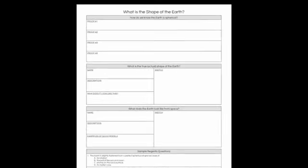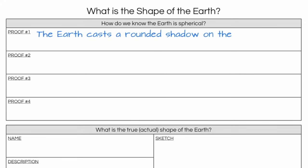Let's go to our handout. Proof number one is that the earth casts a rounded shadow on the moon during a lunar eclipse. You can pause here and fill in that portion of your handout. Let's move on. We need some more evidence, because I'm certainly not convinced yet. So here comes proof number two.